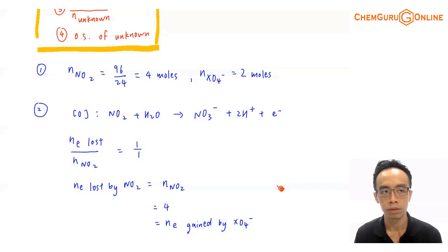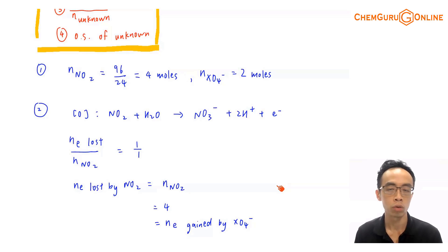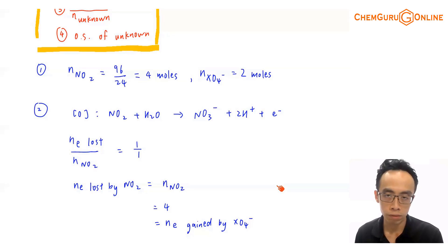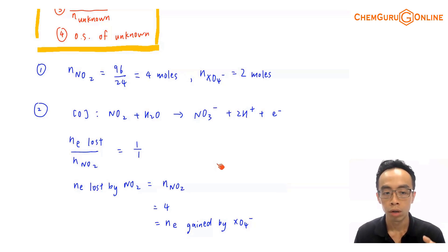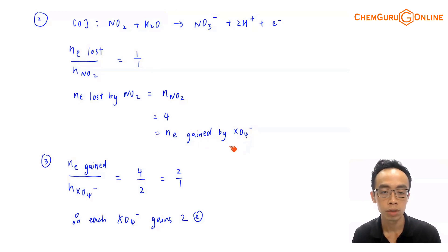This is a fundamental concept in redox reactions: redox is ultimately a transfer of electrons. If one species is oxidized, it loses a certain number of moles of electrons; if another is reduced, it gains the same number. There are no spare or remainder electrons floating around — the transfer is 100% from the species oxidized to the species reduced. Therefore, the moles of electron lost by NO2 and the moles of electron gained by XO4⁻ are exactly the same: 4 moles.